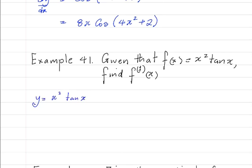It's a product. And the product rule says that if y is equal to uv, dy by dx would be equal to: leave the first, differentiate the second — dv by dx — plus differentiate the first, leave the second. So this is v du by dx. That's the product rule.